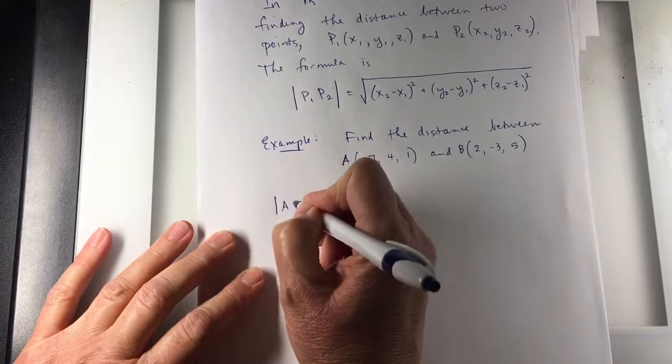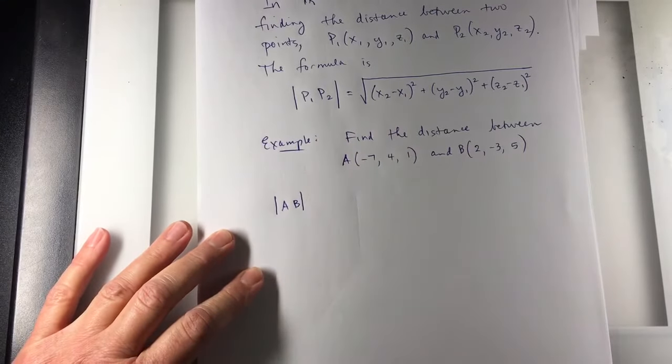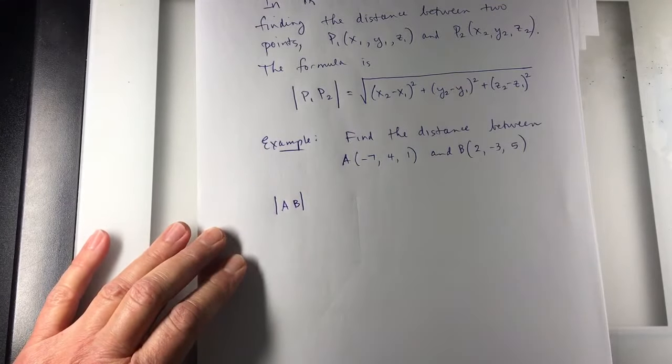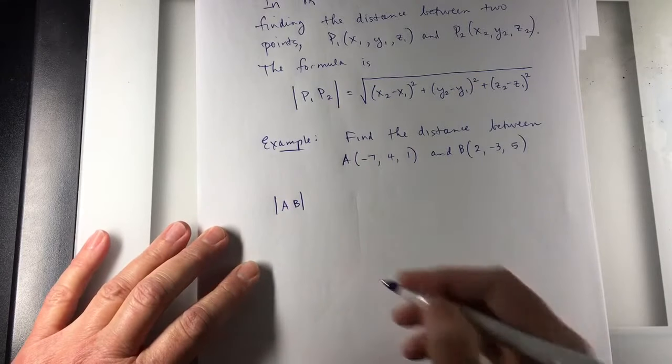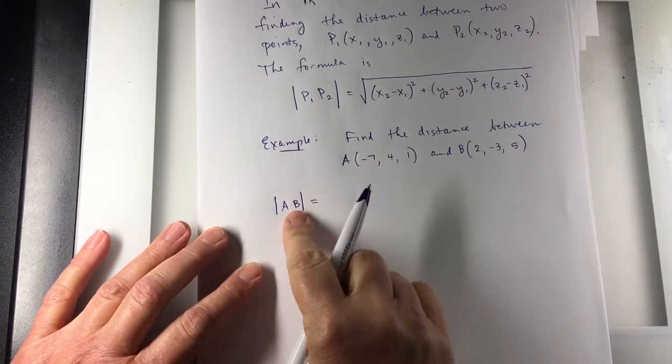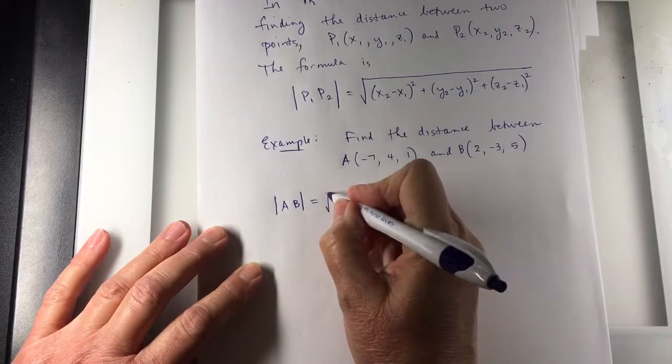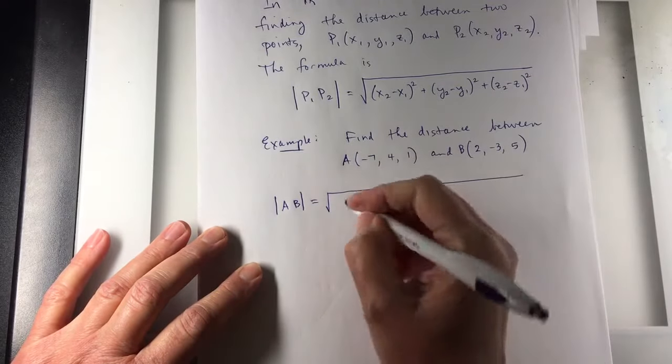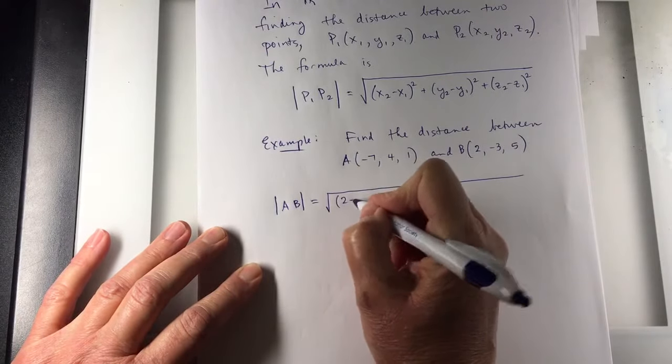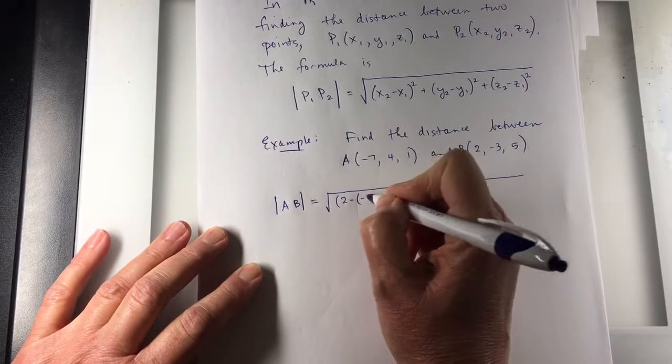I'll say the distance, if I follow the formula, I'm going to be doing B minus A. Since I wrote AB right here, if I'd written BA, it'd be the other way, but for this, it doesn't really matter.